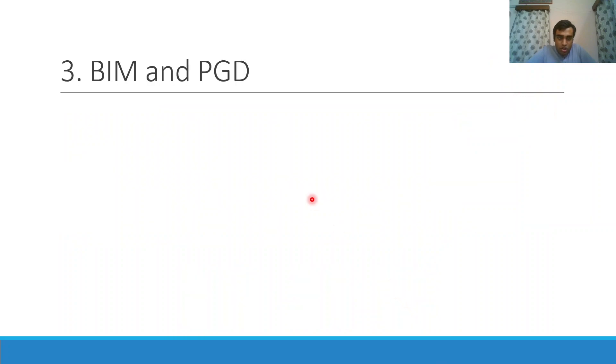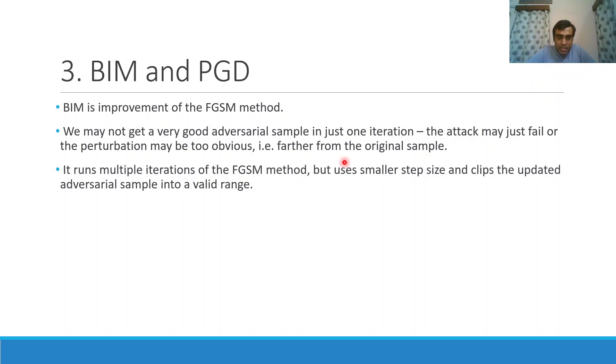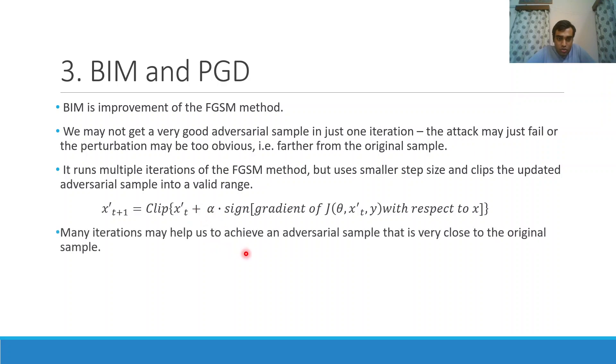Now the third method, BIM and PGD, are built on top of the FGS method. BIM method is a generalization of the FGS method. In the FGS method we were only doing one iteration, but we may not get a good adversarial sample in just one iteration. The attack may just fail or the perturbation may be too obvious. So we run multiple iterations of the FGS method, but we also have to take care to use smaller step sizes and clip the updated adversarial sample into a valid range. At t plus one iteration we will take the tth value and add alpha times sine of this gradient with respect to the input. Many iterations help us to achieve an adversarial sample that is very close to the original sample. PGD is a generalization of BIM which uses a projection operation instead of the clip operation.